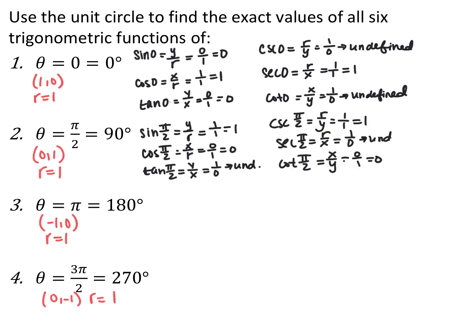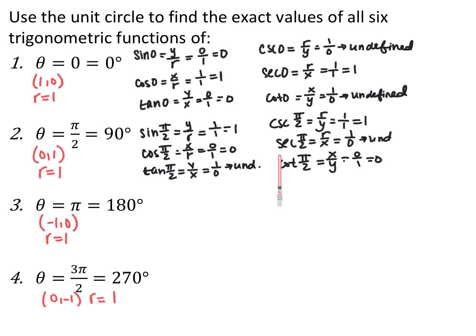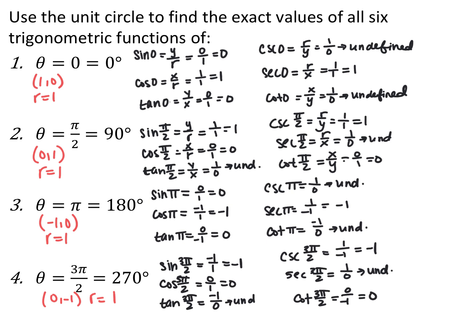For theta equals pi over 2, the coordinate point is (0, 1) and radius is 1. Sine of pi over 2 is 1. Cosine is 0. Tangent is undefined. Cotangent is 0. Secant is undefined. Cosecant is 1. Similar ideas apply for theta equals pi and 3 pi over 2, which have some negative values since x for pi and y for 3 pi over 2 equal negative 1.